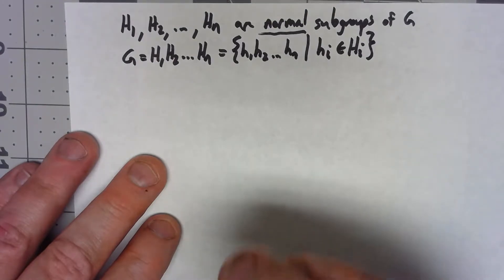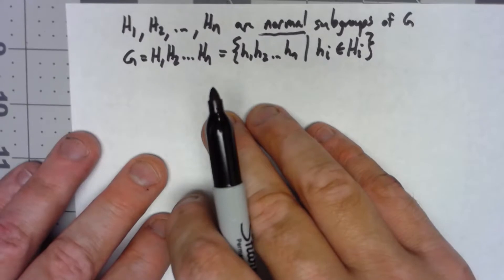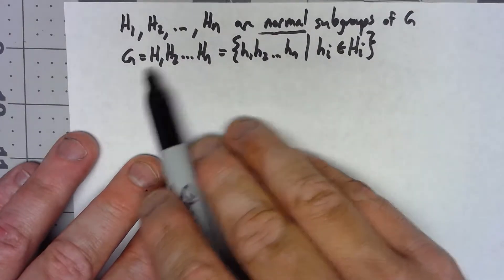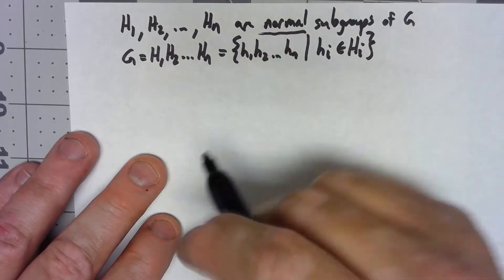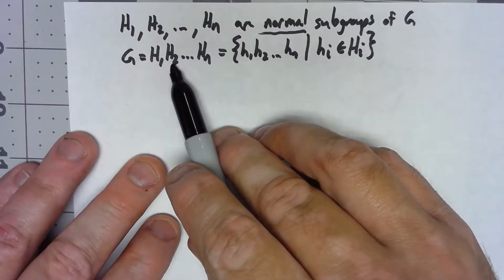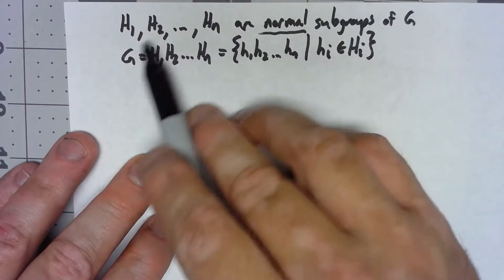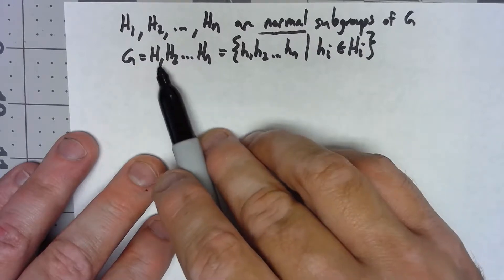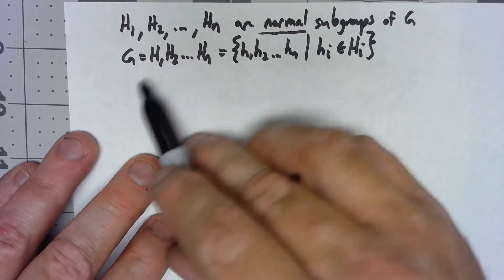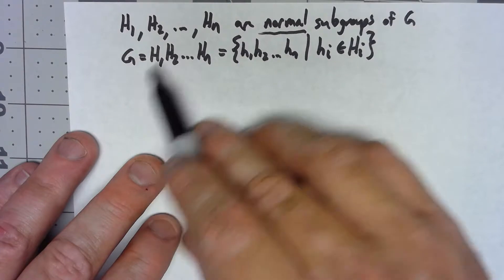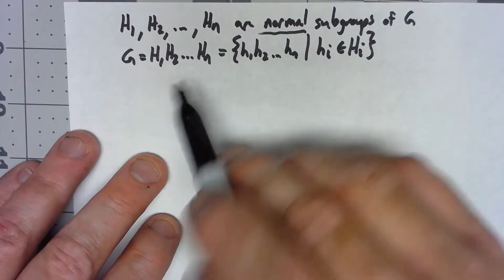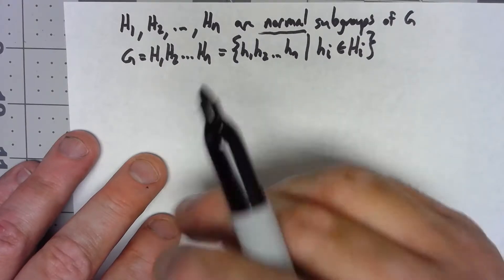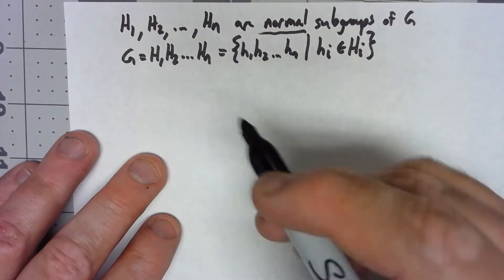It's the bit about the intersections being the identity that gets more complicated, because as I multiply these things together, the sets get bigger and bigger. H1 times H2, you have all the elements of H2, all the elements of H1, and all the things you can get by multiplying elements of H1 times elements of H2, and in H3 it gets even bigger. Those are the sets we kind of need to look at.